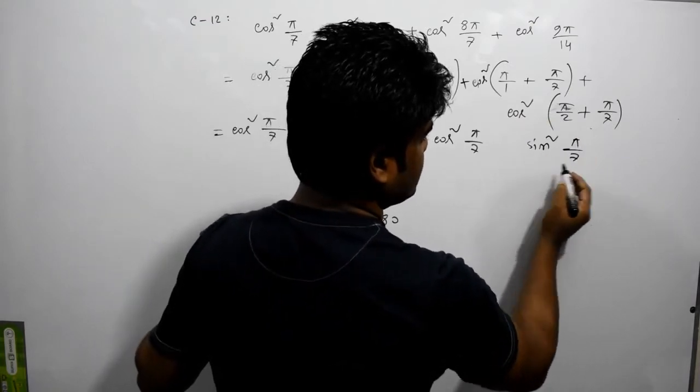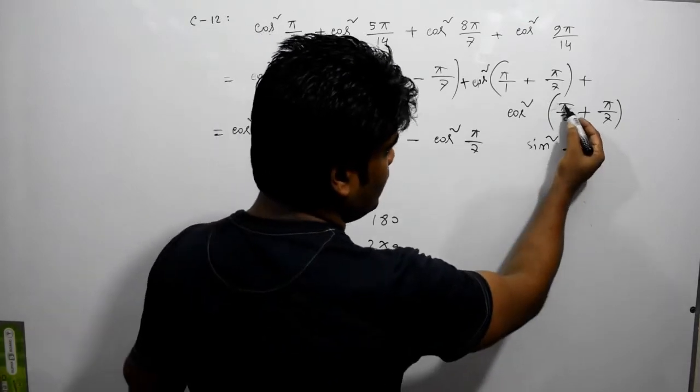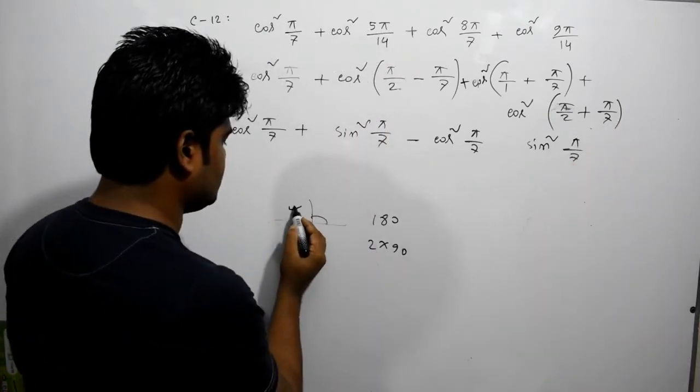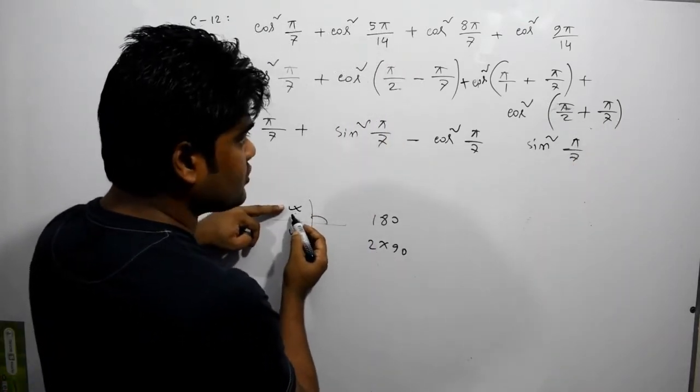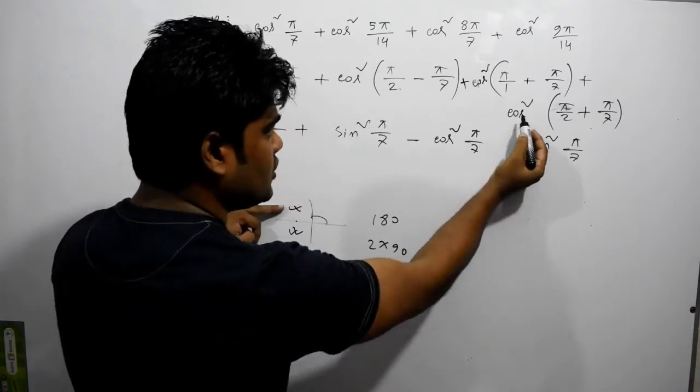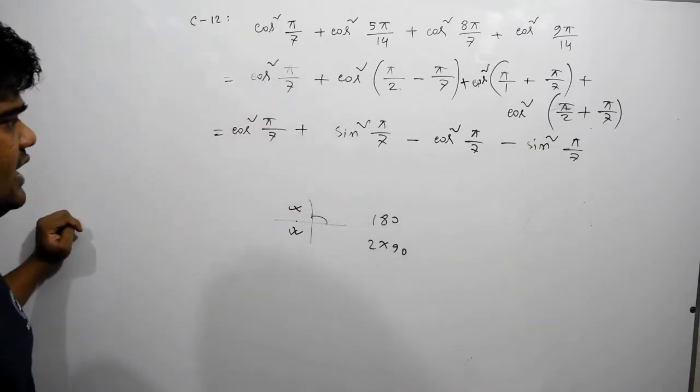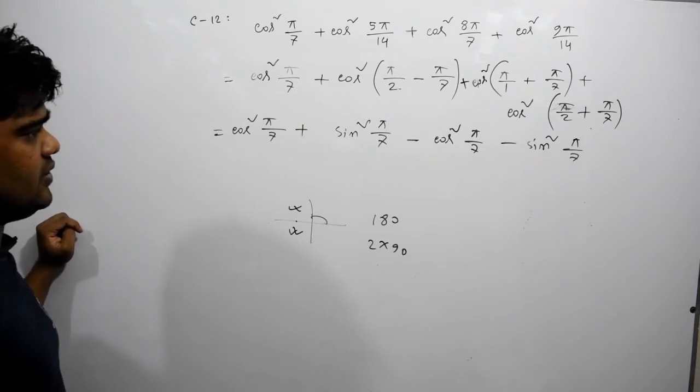So the cos of 5π by 7. So this is 90 plus. So this cos of 9 is negative. Right? So let us see how we can do this.